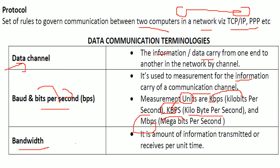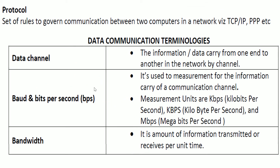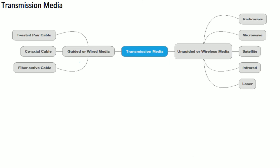Bandwidth is like a pipe — it refers to how much water can flow per second, meaning the width of the pipe determines the flow. In networking, bandwidth is the amount of information transmitted or received per unit time. You can also define bandwidth as the difference between the highest and lowest frequency of a channel.